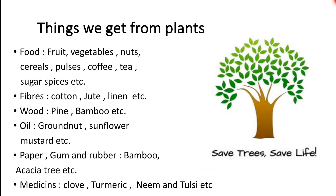We get paper, gum and rubber from bamboo, acacia tree, etc. We get medicines from clove, turmeric, neem, tulsi, etc.